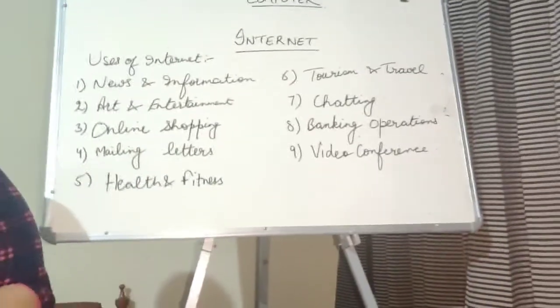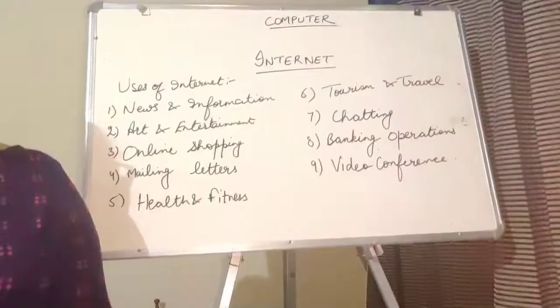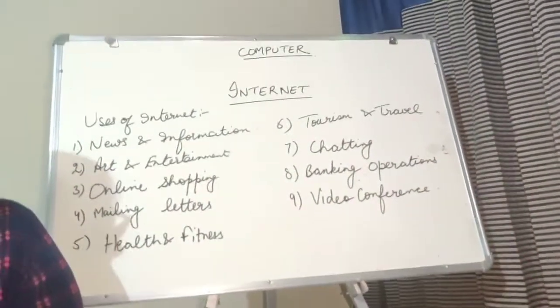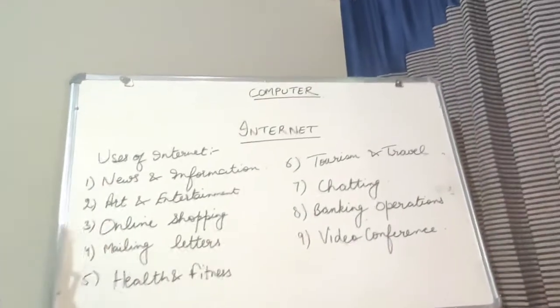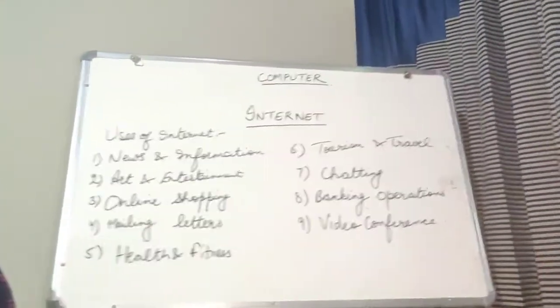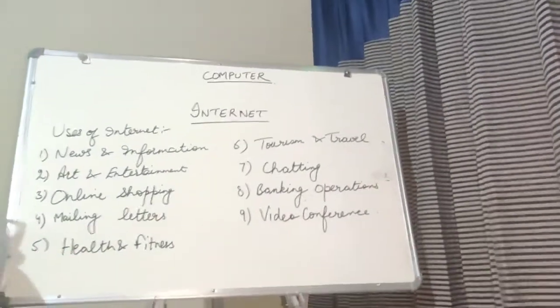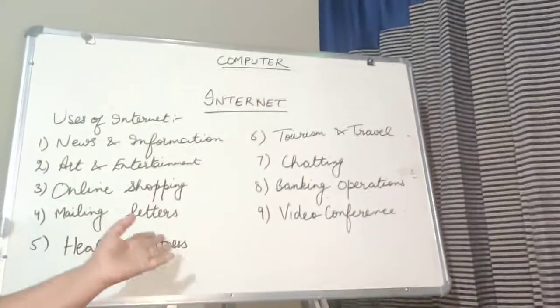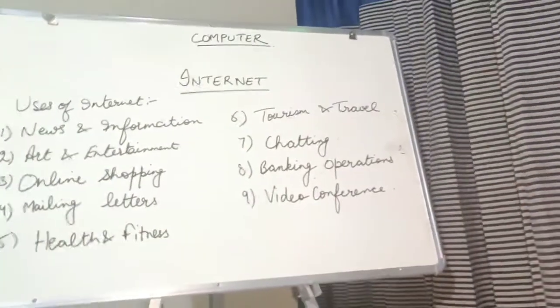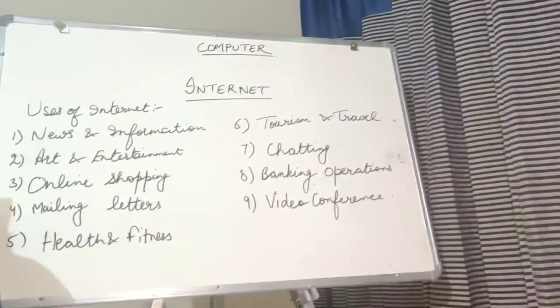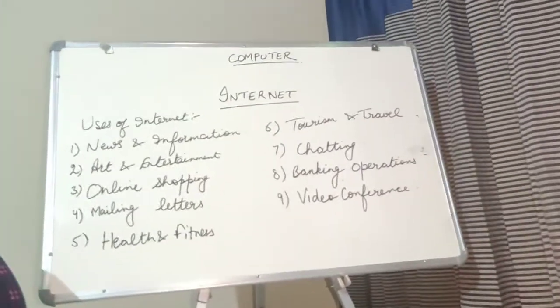Mailing letter. Aapko kisi ko koi letter bhejna hai. For example, aapne kisi relative ko letter bhejna hai. To kitne din laghe ki isko bhejne me. Agar koi courier se bhi bhej doge, that letter took place, means that letter took place to deliver to that person, it will be minimum 3 to 4 days. Lekin agar aap e-mail kar do usko internet ke through, to woh within a second us bande ke paas pahunchayega and he or she can read.